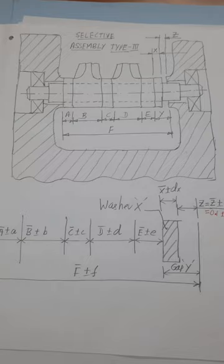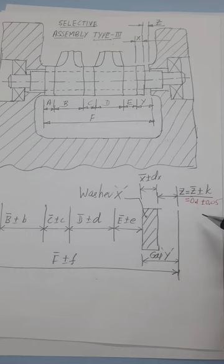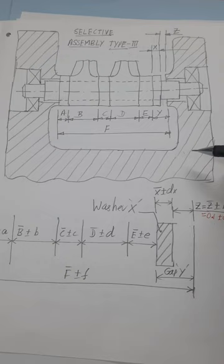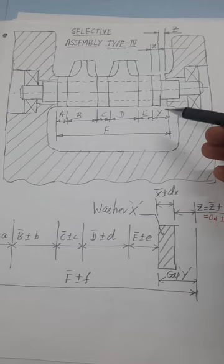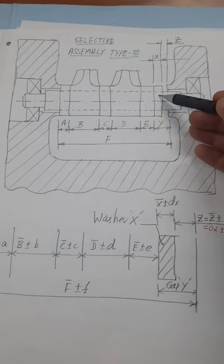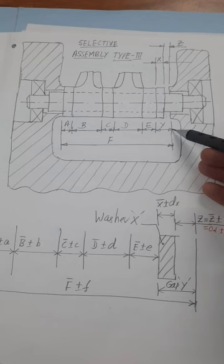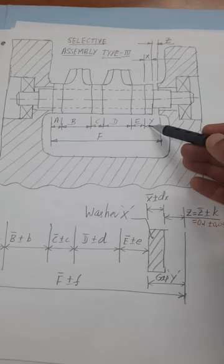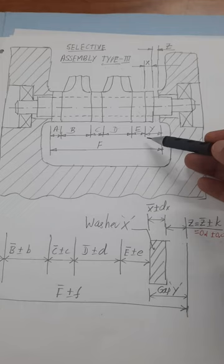When the selective assembly is adapted to maintain the required play of 0.1 to 0.05, all the parts are manufactured as interchangeable parts except the last part. The method of assembly is to mount all the parts over the shaft except the last part — here the last part is washer X. Before putting on washer X, the gap prevailing between the last-but-one part and the body is to be measured. The dimension Y is the gap which is to be measured before you decide the suitable washer X.